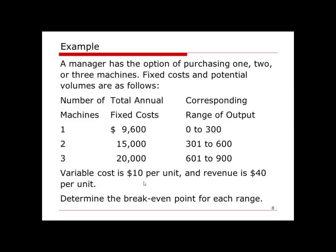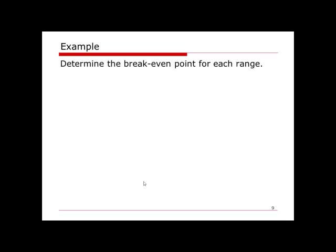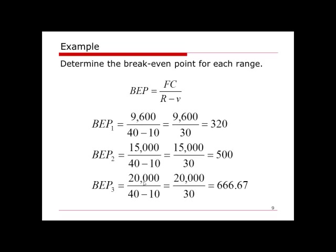We need to determine the break-even point for each range — that is, for one, two, or three machines. The break-even point equals fixed cost divided by revenue minus variable cost. For one machine the break-even point is 320 units, for two machines it is 500 units, and for three machines it is 666.67 units. Producing 666 units results in a loss; producing 667 units generates profit.